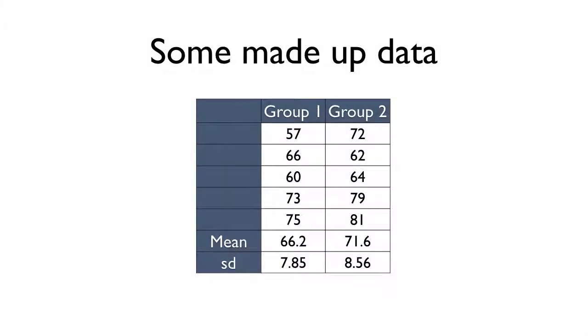So here's some data that I made up that mean nothing. I don't know what they are, but those numbers are real. They're actual numbers. There are two groups. One has a mean of 66.2, one has a mean of 71.6, standard deviations of 7.85 and 8.56 respectively. What do we got? N of five? Is that right? Yes. Five in each group.